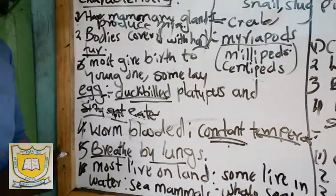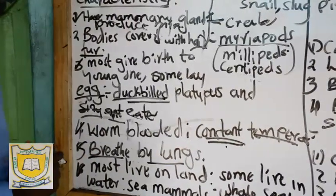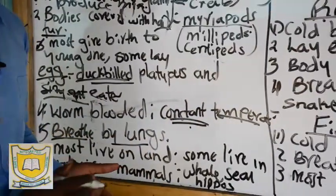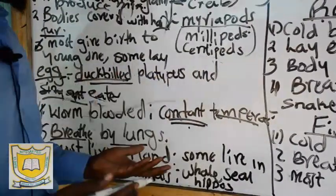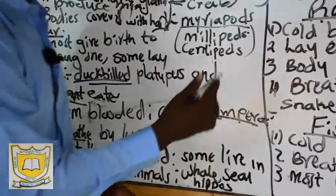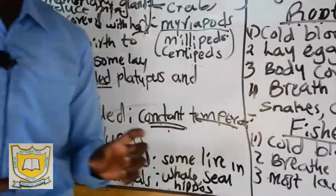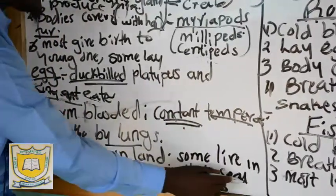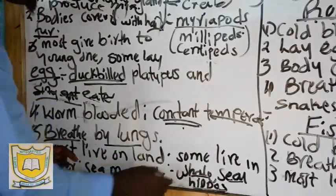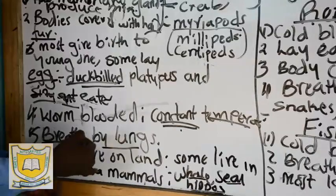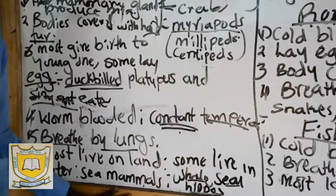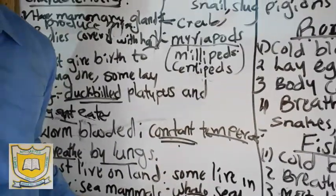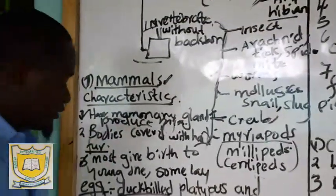Characteristic number seven: most mammals live on land, while others live in water — for example, whales, seals, and hippos. The name given to these mammals that live in water is sea mammals.